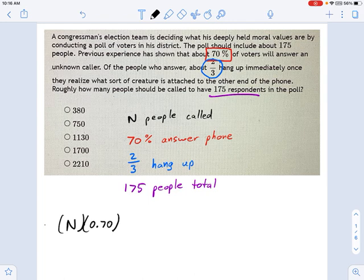And then how many people are going to keep on talking once they realize what's on the other end of the phone? Well, if two-thirds of them hang up, how many are left? It's going to be one-third. So we've got n times 70% times one-third. This is the number of people actually talking to the congressional team. And that becomes only 175 people.